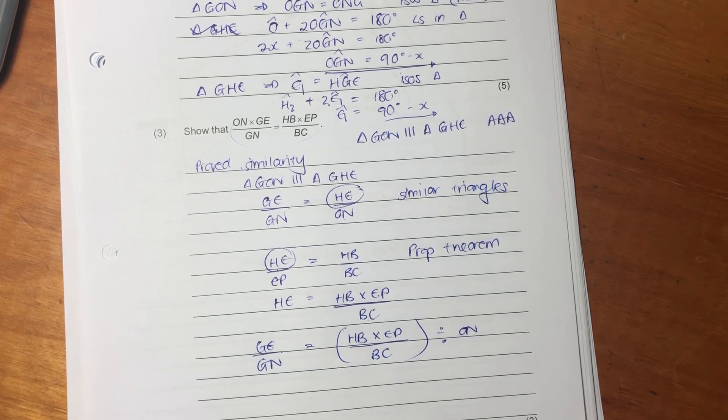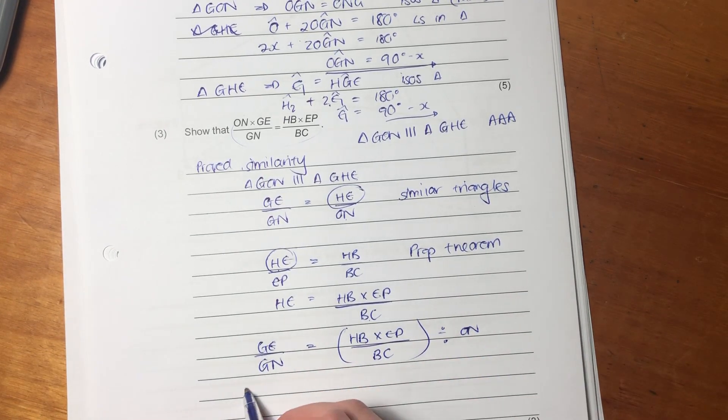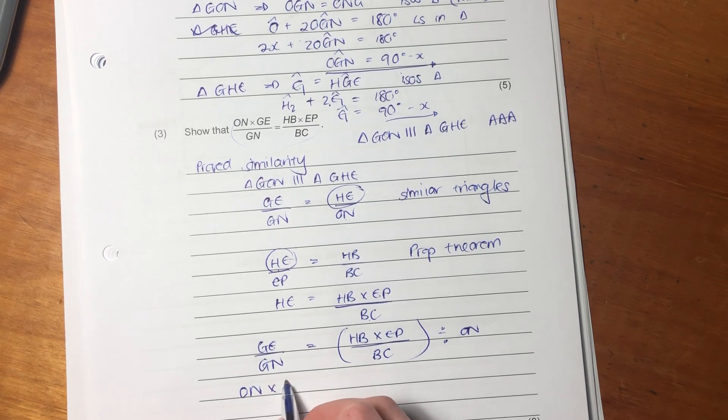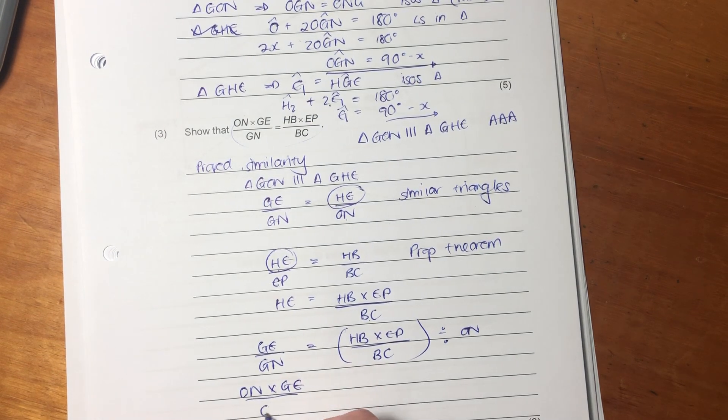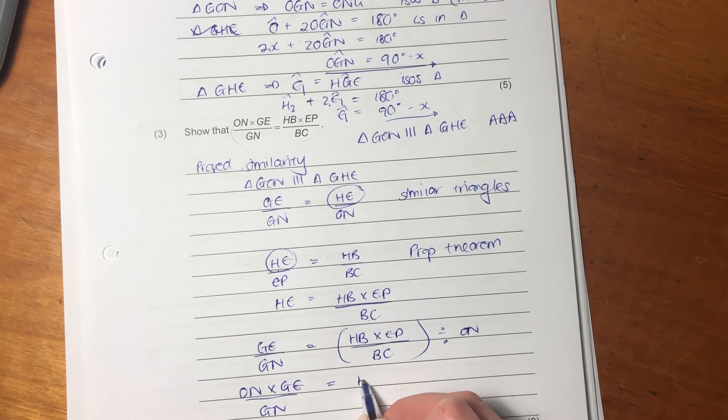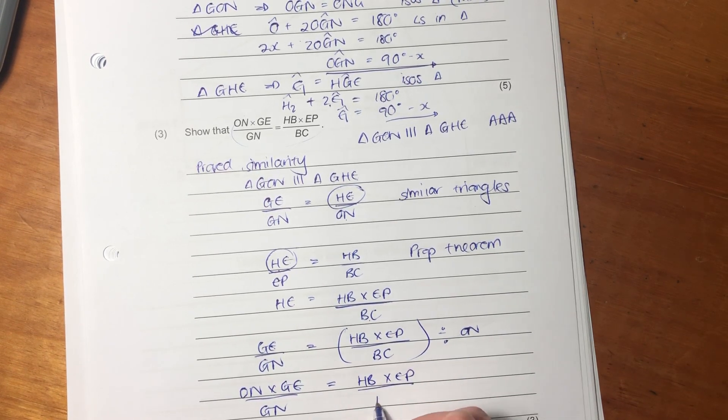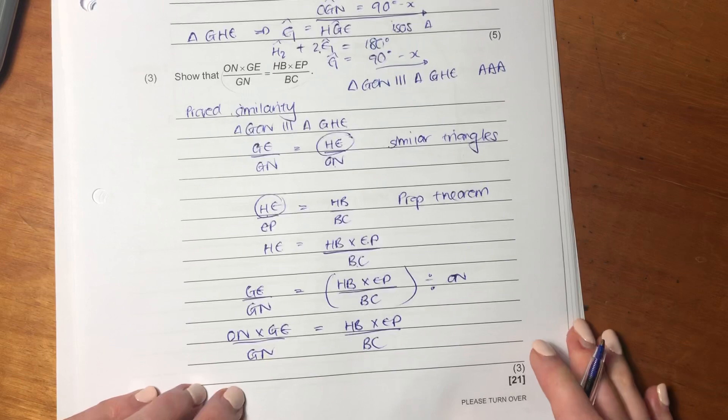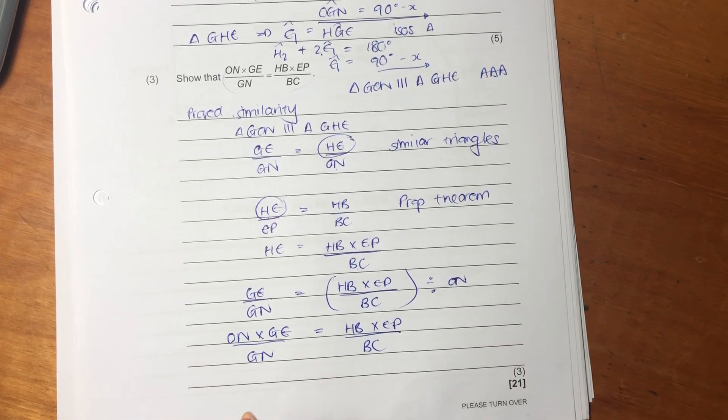But let's get rid of that O-N, it's bothering me. Let's bring it to the other side. So then we get O-N times G-E over G-N equals H-B times E-P over B-C. And that is our answer.